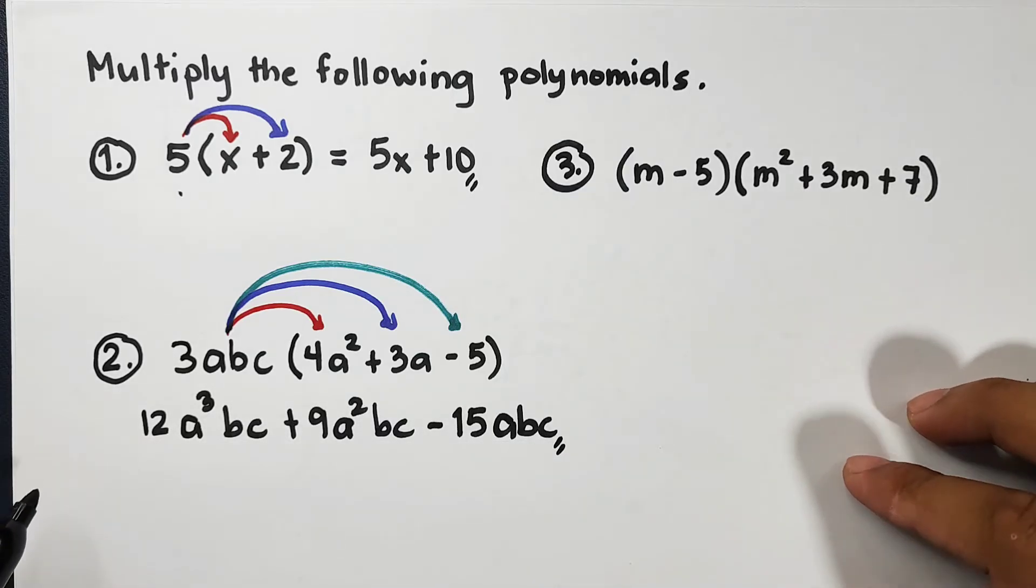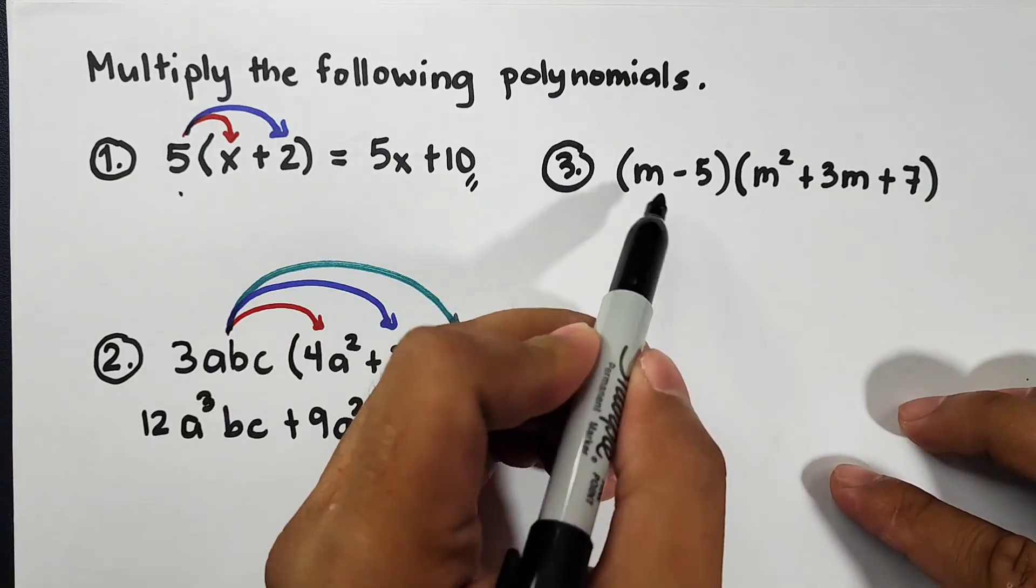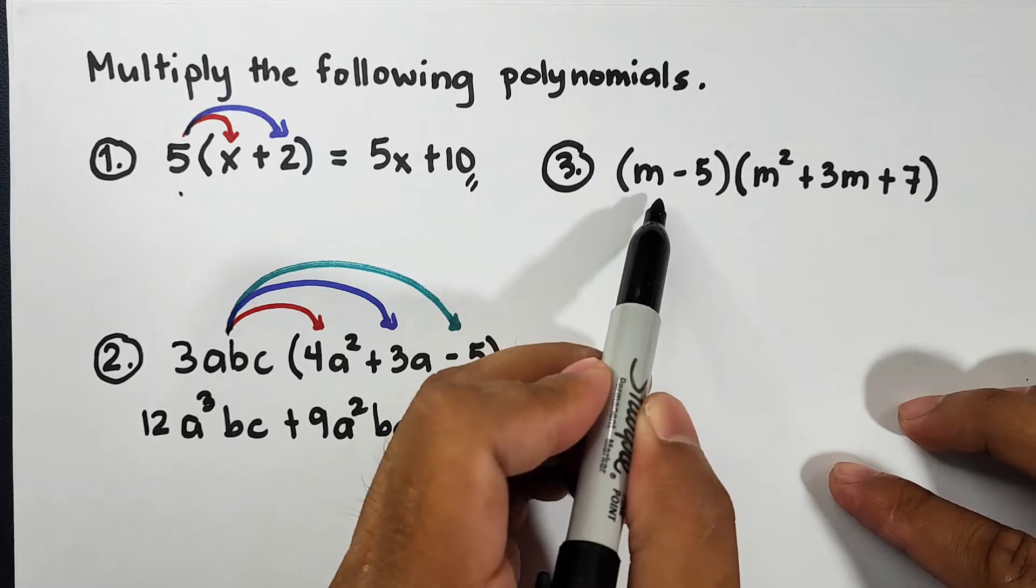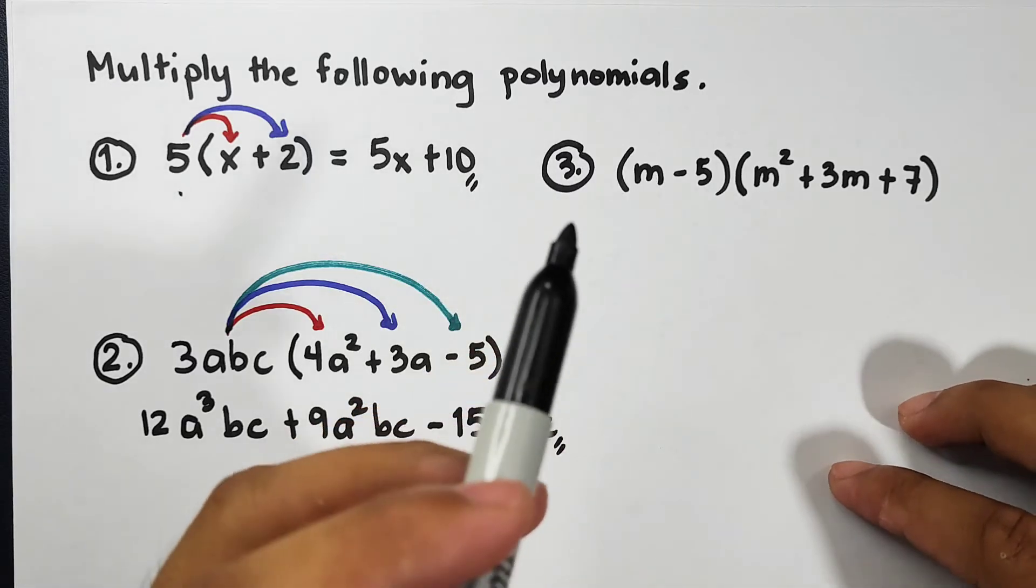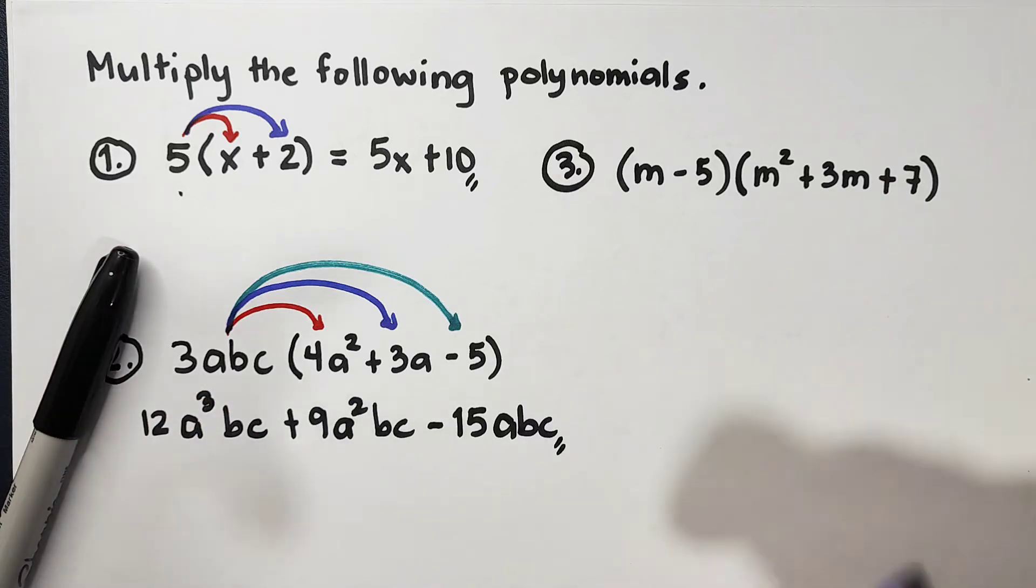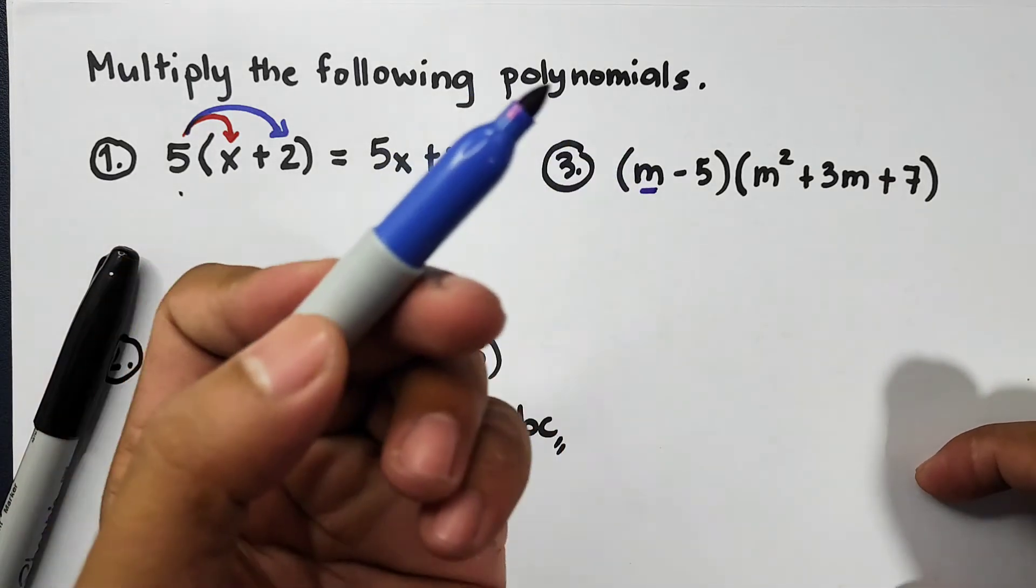Let's continue with the next item. Here one of the polynomials is a binomial. Is it possible to use distributive property? Yes, let's try. We will try to distribute first the variable m. I will use the blue ink.